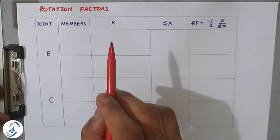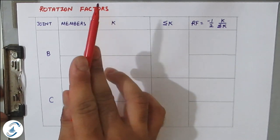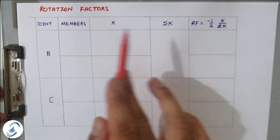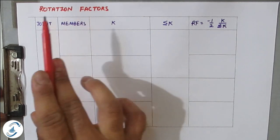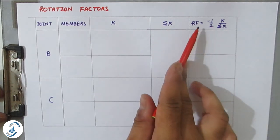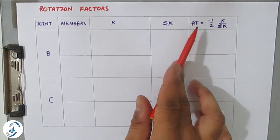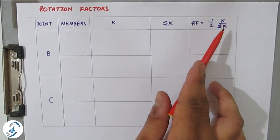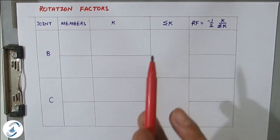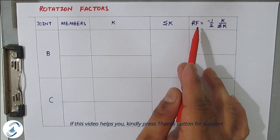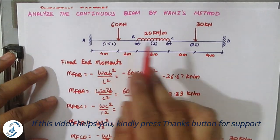The second step in Kani's method is to determine rotation factors. In moment distribution method these were called distribution factors, but in Kani's method they are called rotation factors. The table format is almost the same, but the formula changes. The rotation factor RF = minus (1/2) × (K / ΣK). This minus half is the key difference to remember.